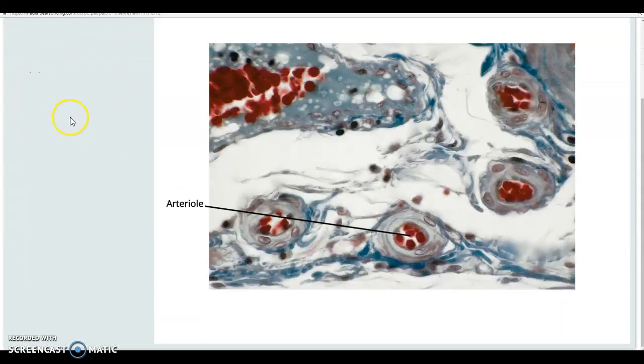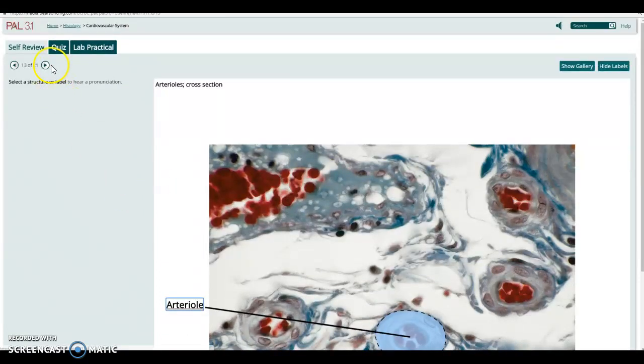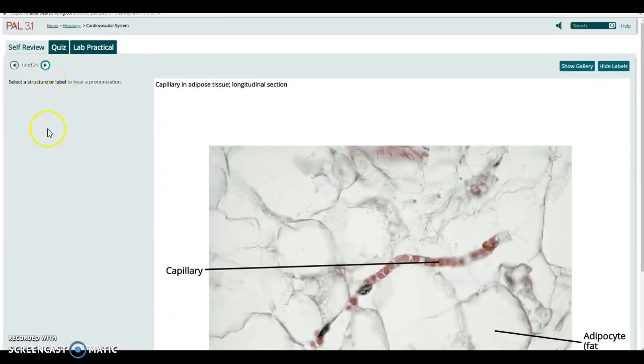This is now an arteriole, a very small artery with some red blood cells in it and a capillary where you can see those red blood cells lining up in single file fashion running through the capillary on the slide here.